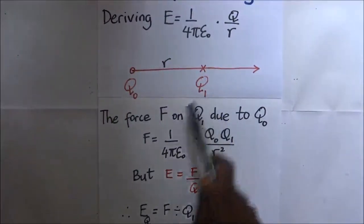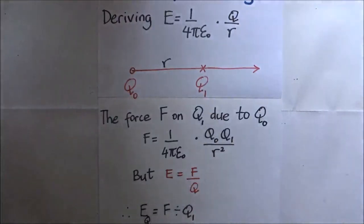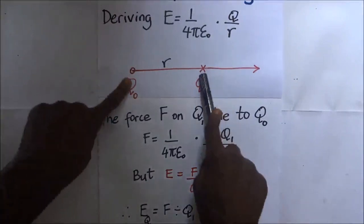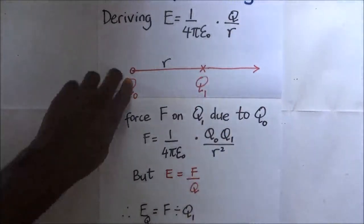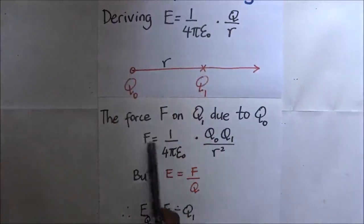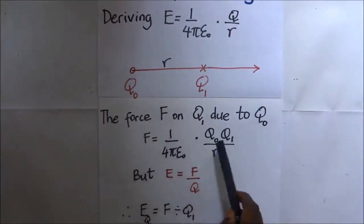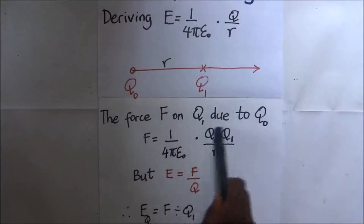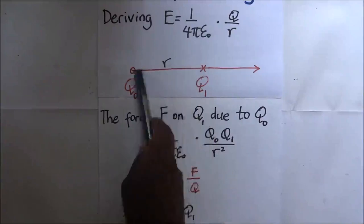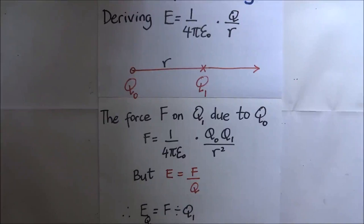The force acting on q₁ due to q₀ is obtained using Coulomb's law of electrostatics, which states that for two point charges the force between them is directly proportional to the product of those charges and inversely proportional to the square of their separation. So F on q₁ due to q₀ equals 1 over 4πε₀ times q₀ times q₁ divided by r squared. The constant 1 over 4πε₀ equals 9×10⁹ by experimental observation.